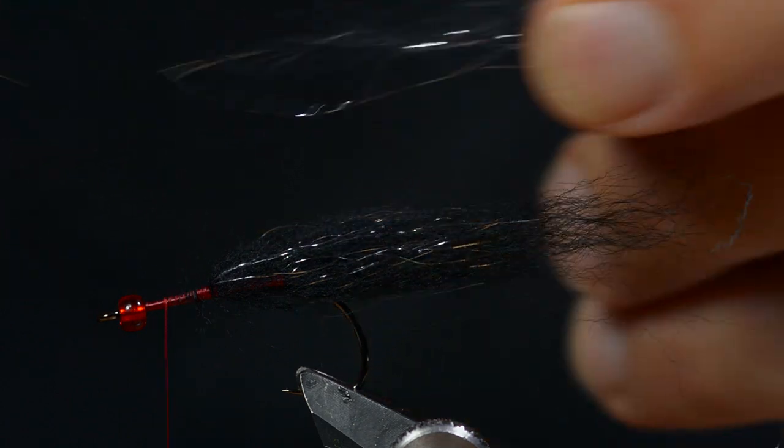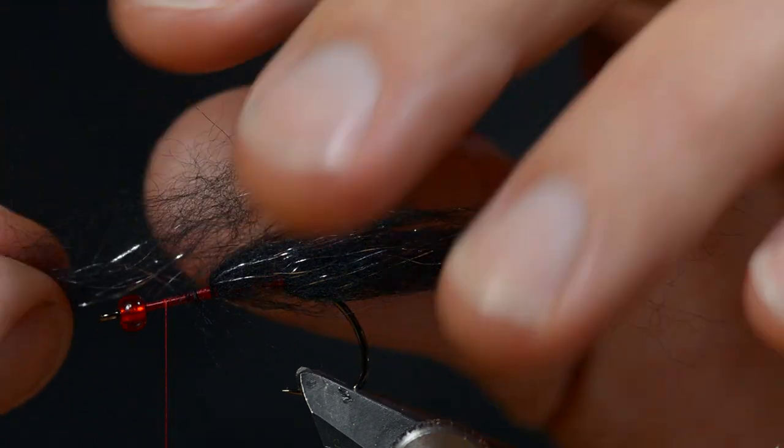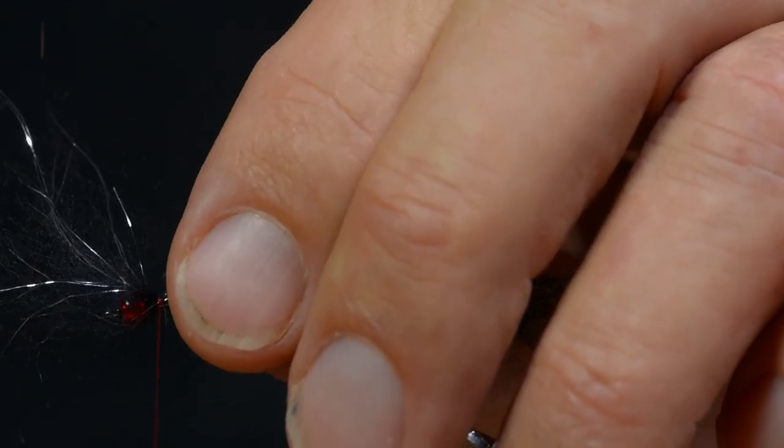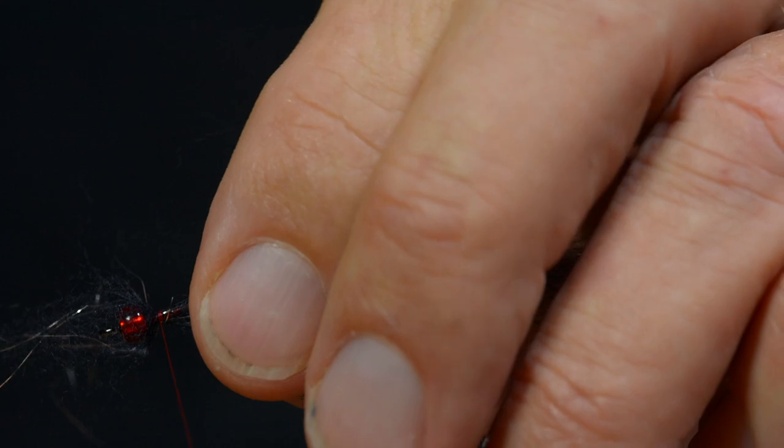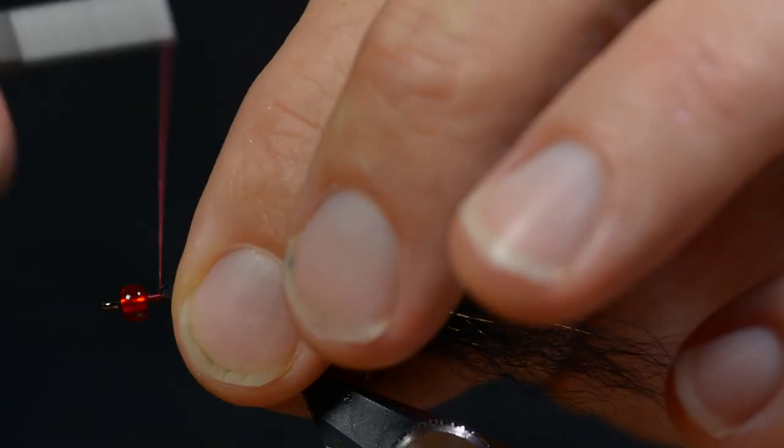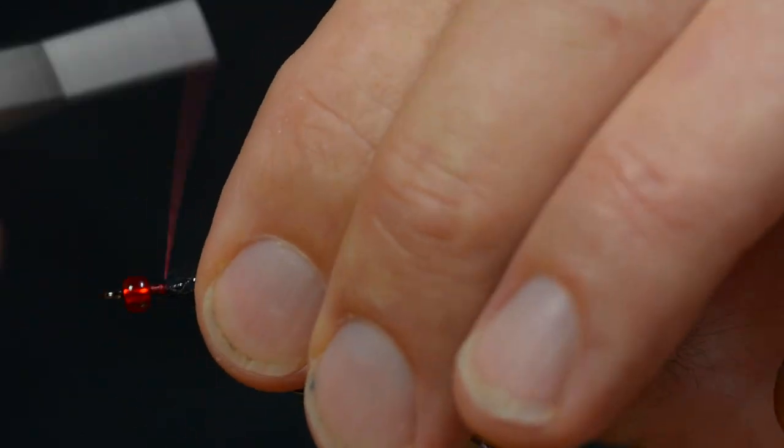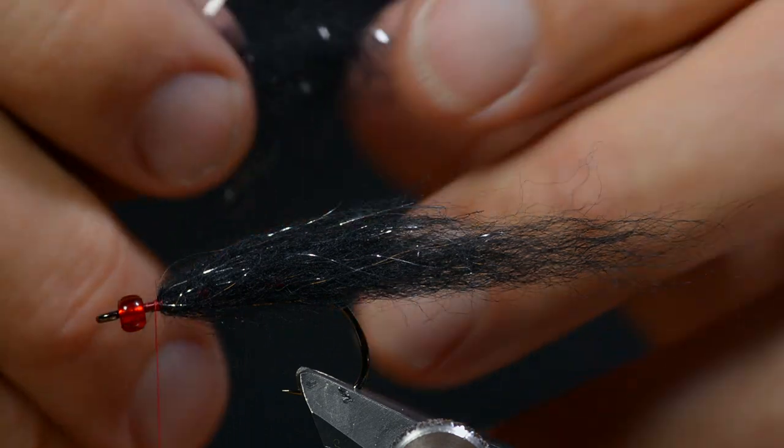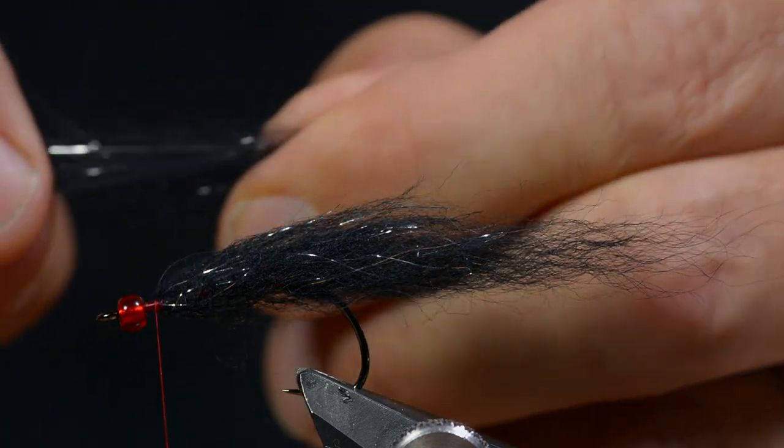Tied in this way, the dubbing is gonna act like several super soft hair hackles tied in along the shank. That adds volume to the fly and lots of movement.